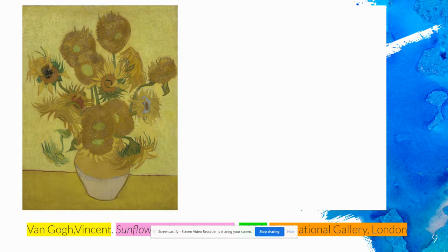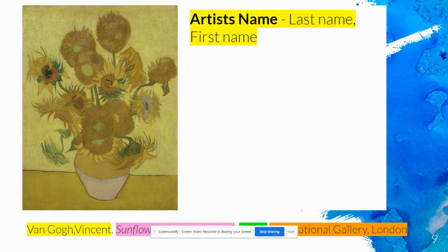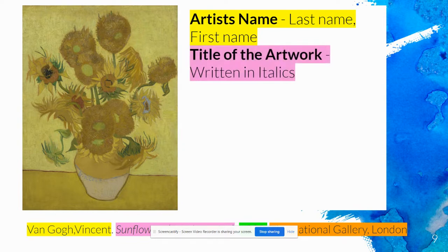The first thing you're going to want to include is the name of your artist, written last name then first name — so last name, comma, first name. For example, Van Gogh, comma, Vincent — goes first, followed by a period. After that you will include the title of the work of art, written in italics.